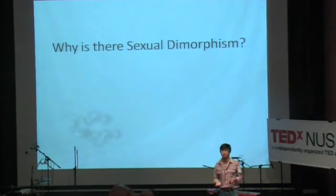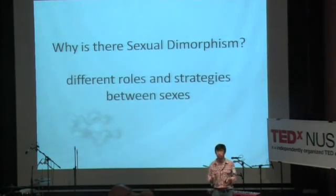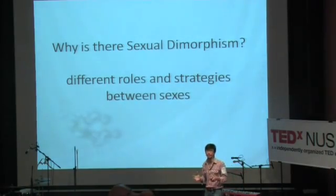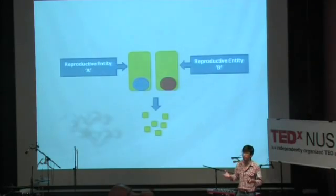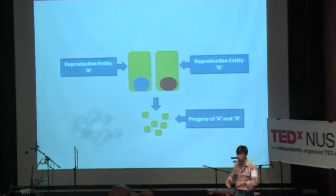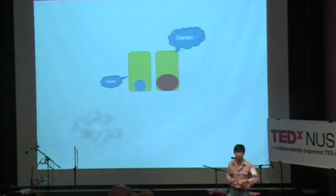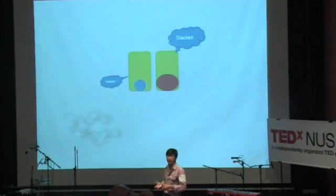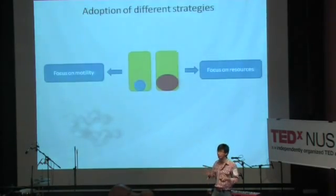So why do we see so many different aspects of morphology between males and females? This has a lot to do with different roles and strategies that different sexes actually take. Let's look at this cartoon — we have entity A and entity B. These entities need to reproduce to produce their progeny. The blue and red circles represent the amount of investment that each entity will contribute to making the progeny. Eventually in any game theory, someone will try to cheat — the blue entity tries to reduce his investment, which the red entity has to pick up the slack for. Eventually, it becomes an adoption of different strategies between these two entities.